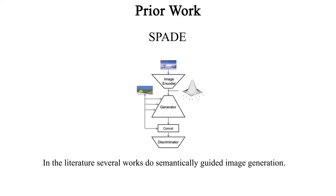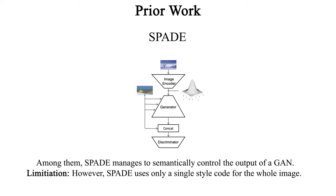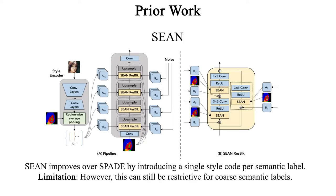In the literature, several works do semantically guided image generation. Among them, SPADE manages to semantically control the output of a GAN. However, SPADE uses only a single style code for the whole image. SYN improves over SPADE by introducing a single style code per semantic label. However, this can still be restricted for coarse semantic labels.